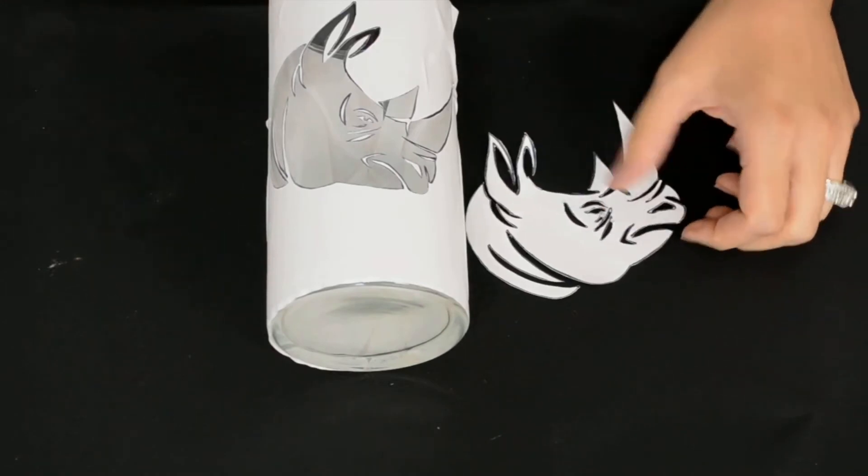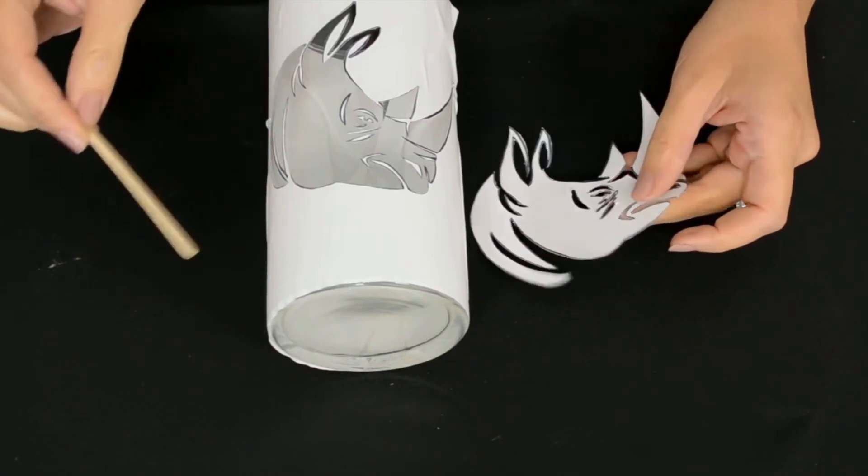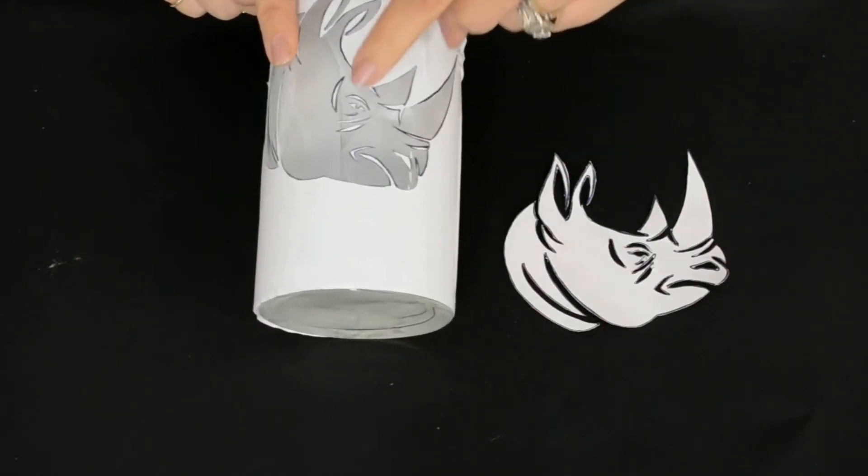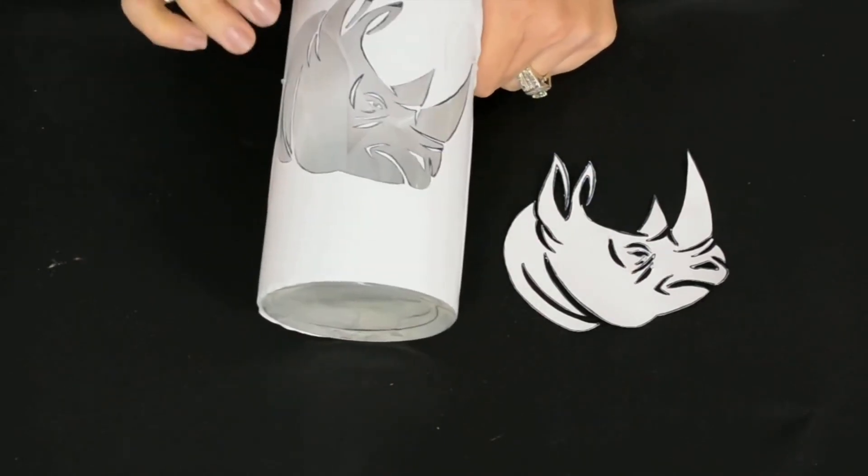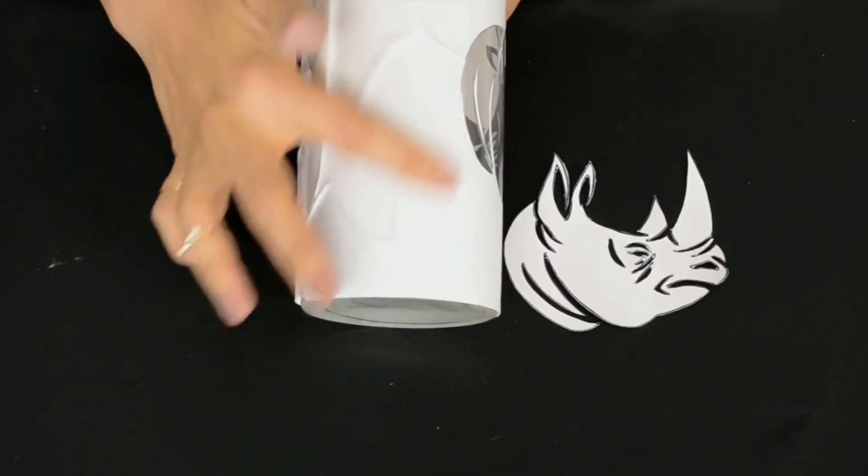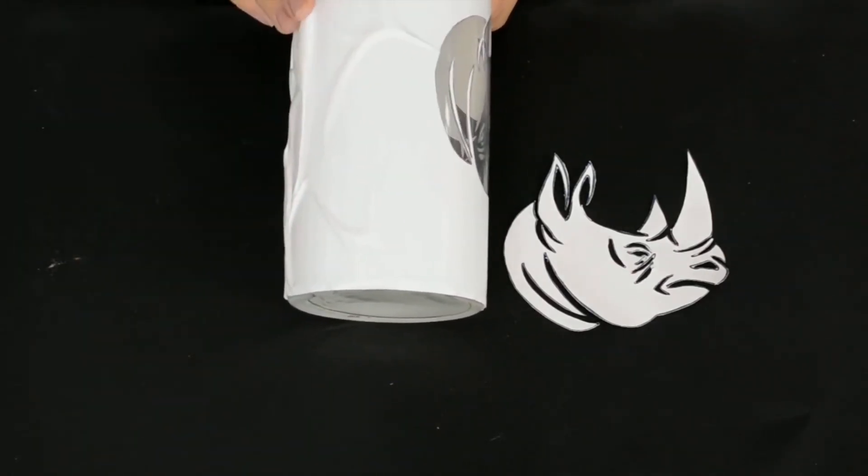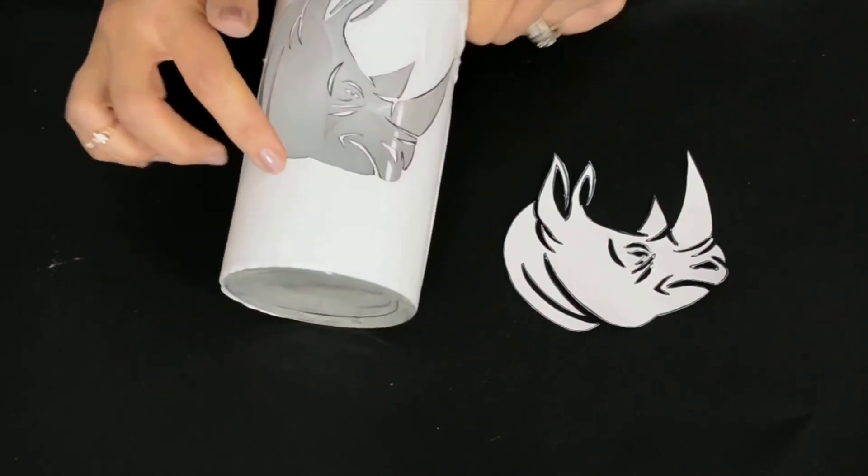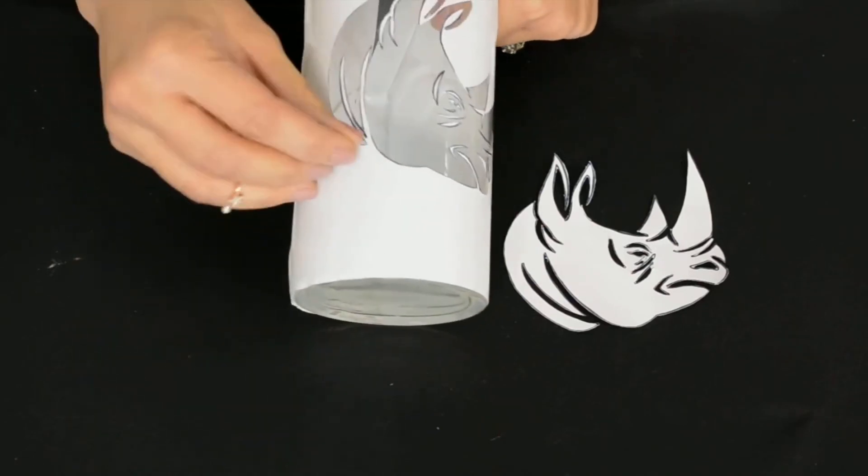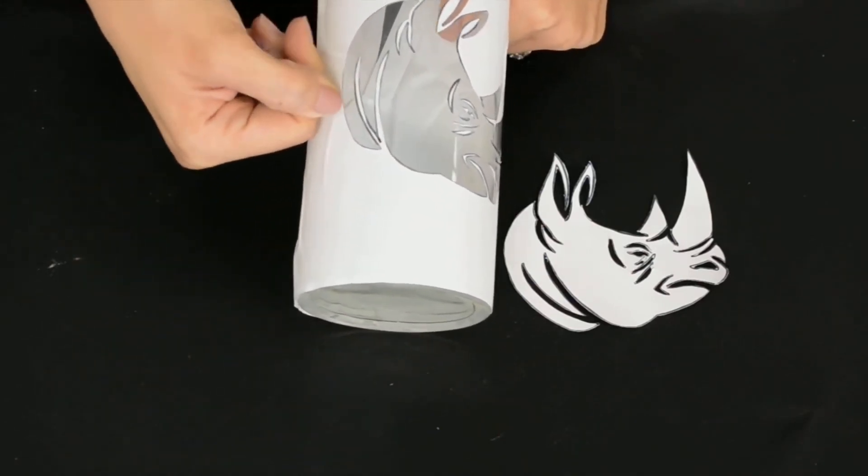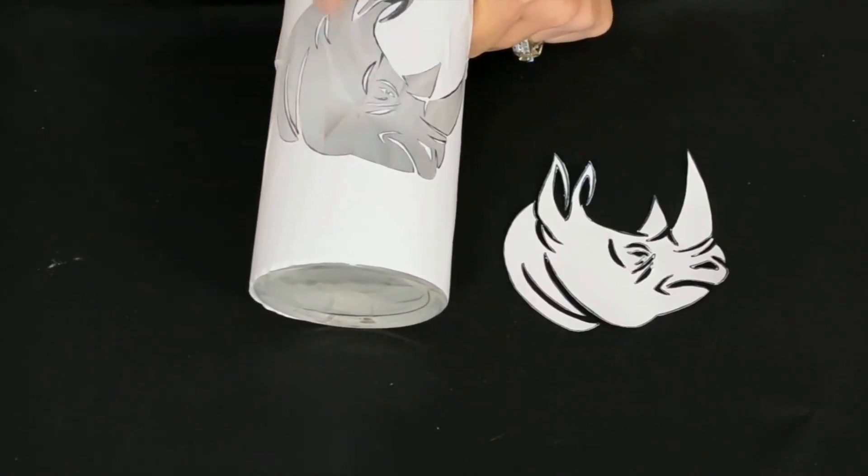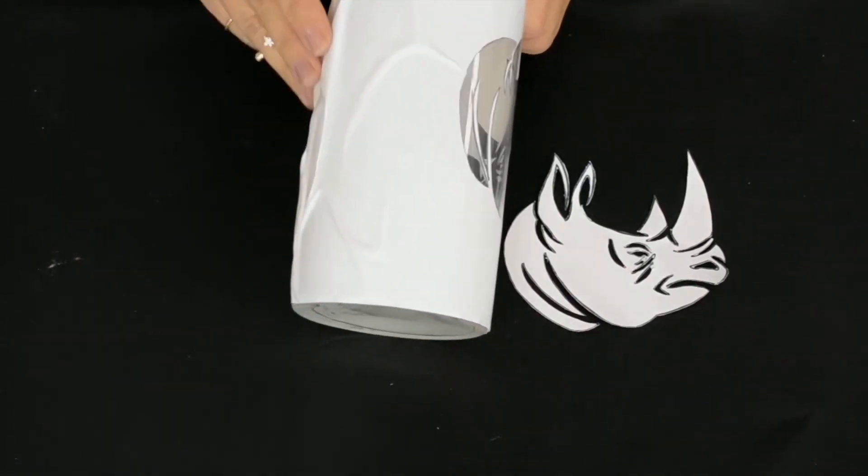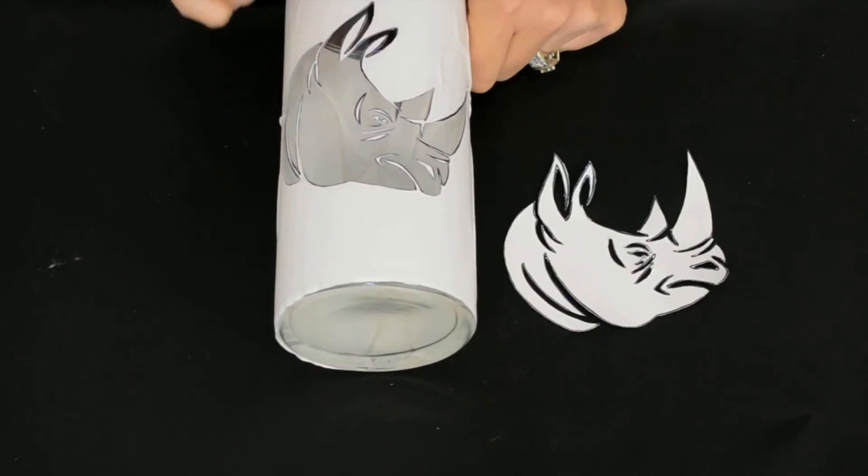As you can see, I have applied the stencil onto the glass. I went back and put the inside pieces that created the nostril, the nose, the eye, the wrinkles. Something I want to point out is the part of the contact paper where it doesn't lay down flat - that's okay as long as right around the perimeter, the edge of your design, as long as that is laying down flat. Go back and use your nail and really press it down to make sure no etching cream gets underneath there. As long as that's flat, then the rest of this doesn't matter.